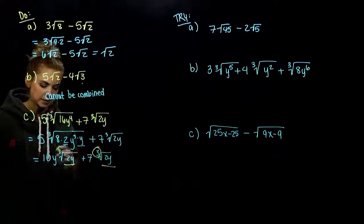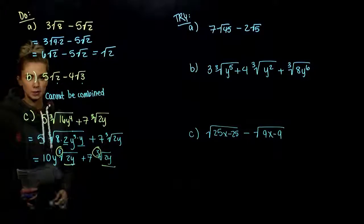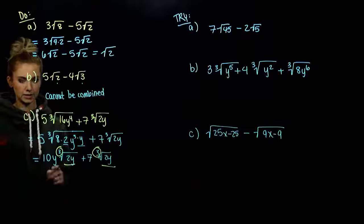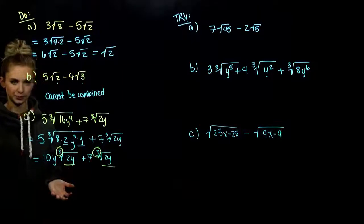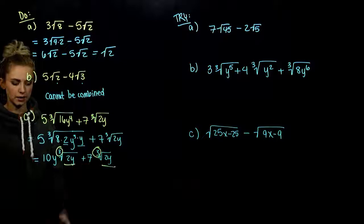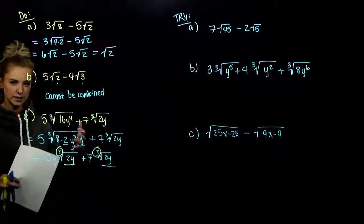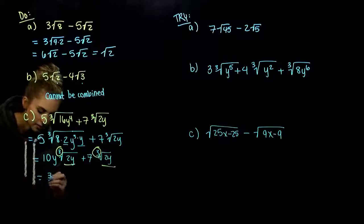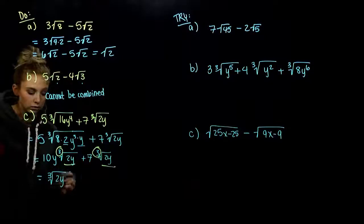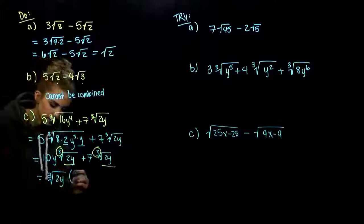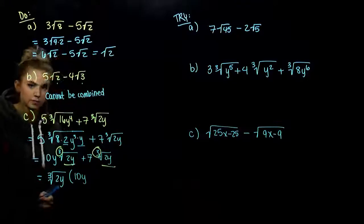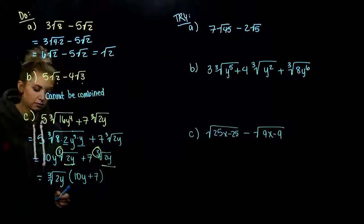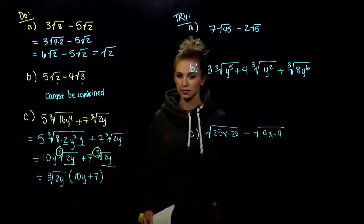When combining these like terms, what about the constants out front? We have y's and constants — we can't combine those together. It's helpful to think: what do both terms have in common to factor out? Our radical. What's left from the first piece? 10y. From the second piece? 7. So the result is the third root of 2y times (10y + 7). Sometimes we can't combine those front terms.